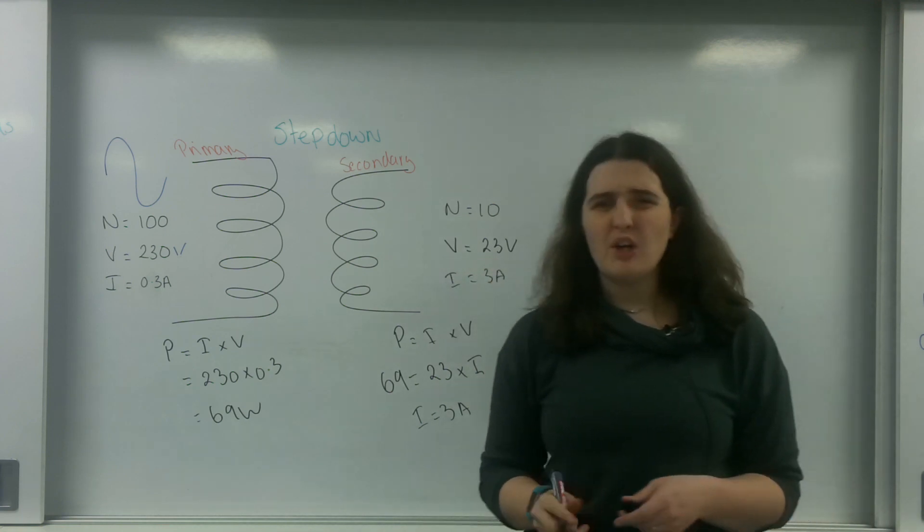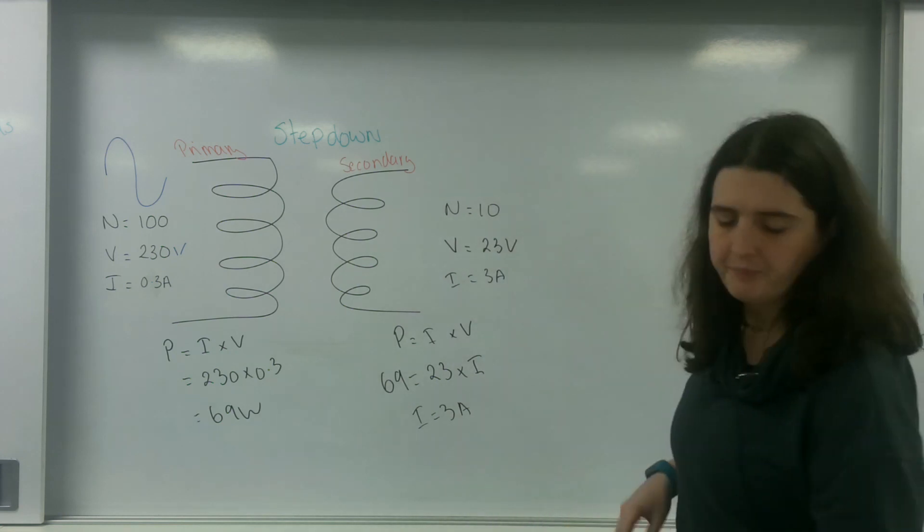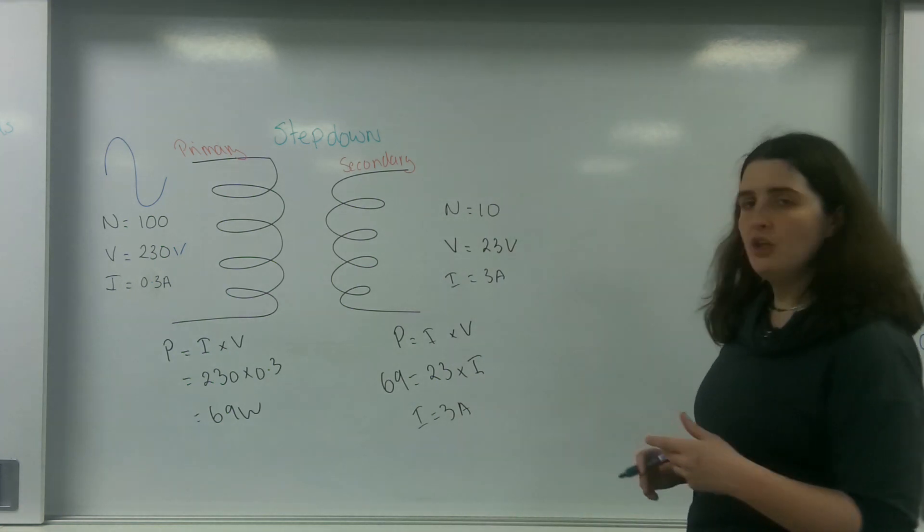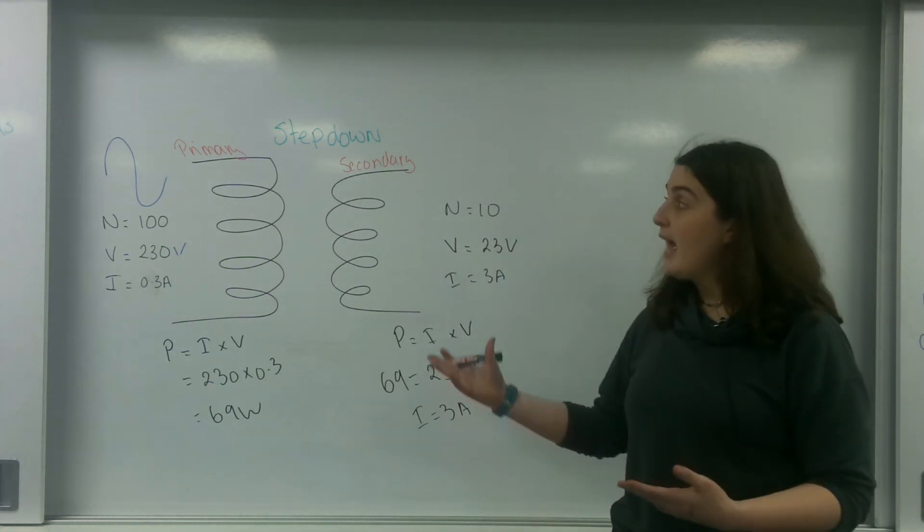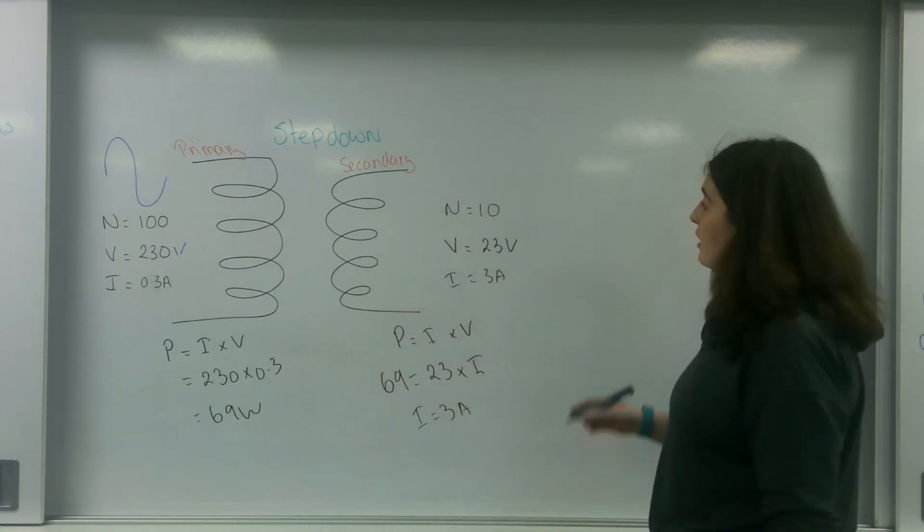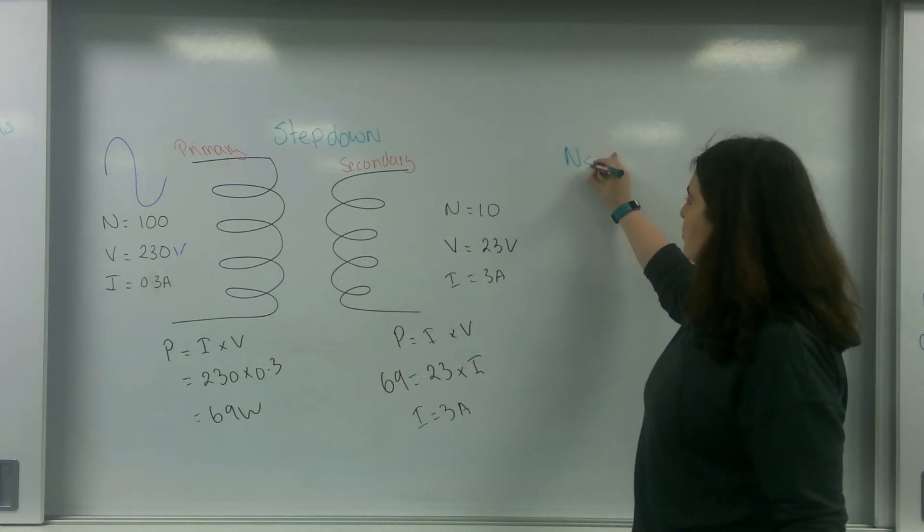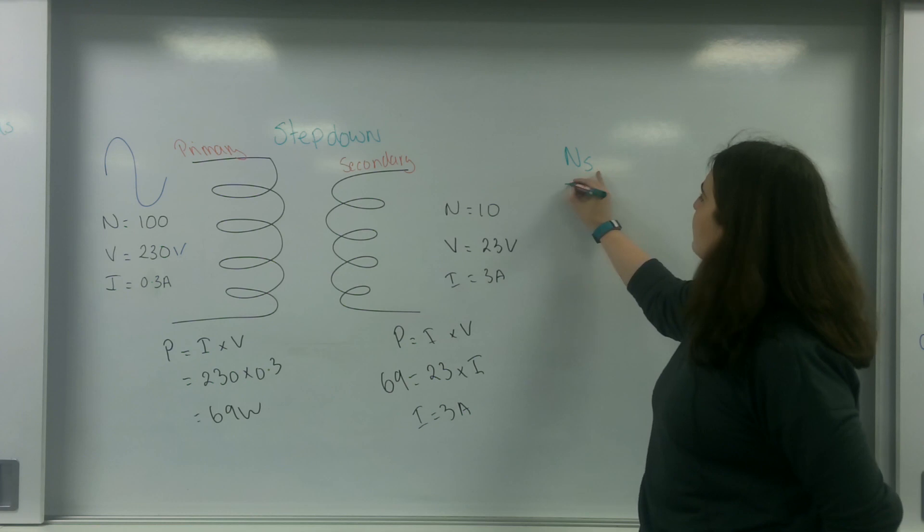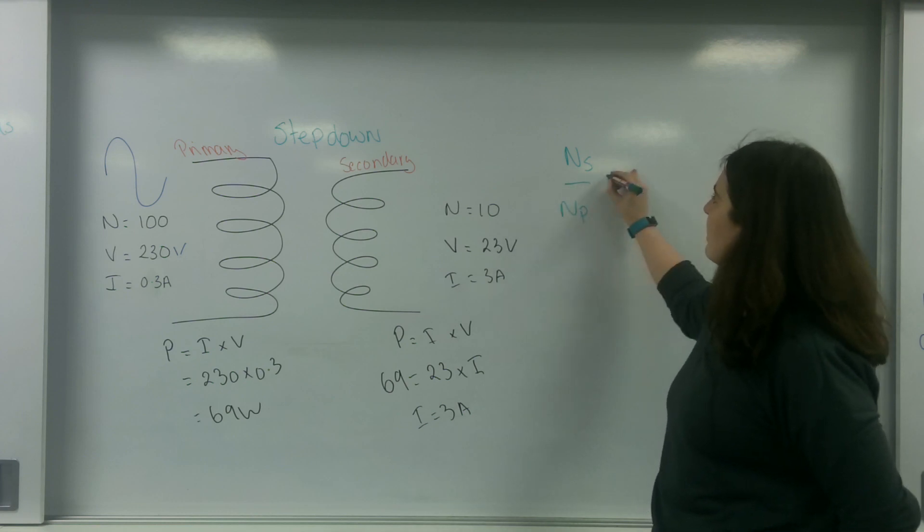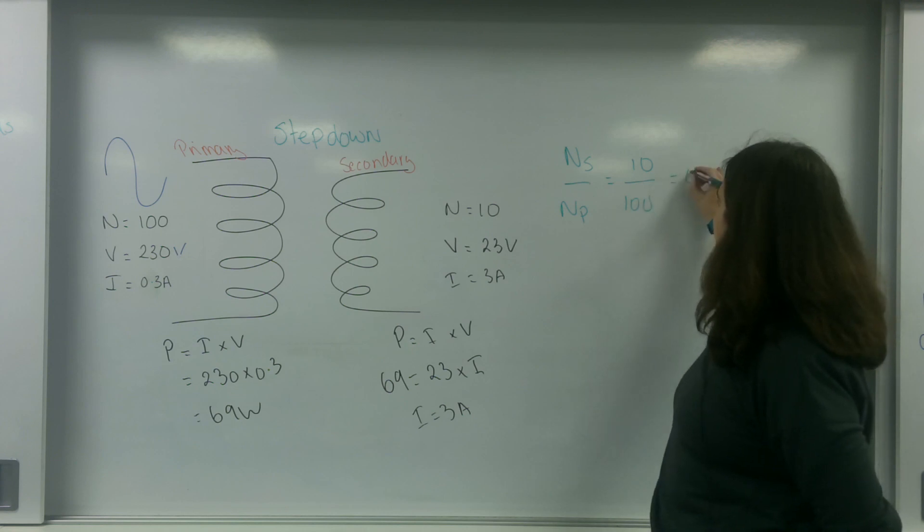And what I'm going to do now is generalize this into a bit of a formula. I'm going to look at the idea of secondary and primary. So if I took my secondary turns and divided it by my primary turns, I would have 10 divided by 100, which is 0.1.